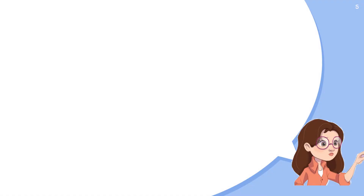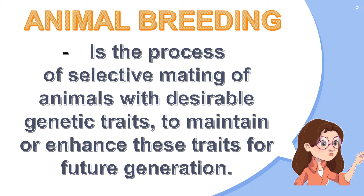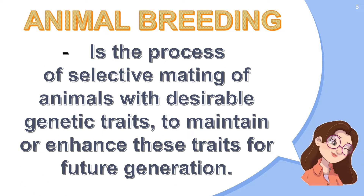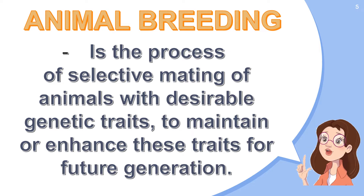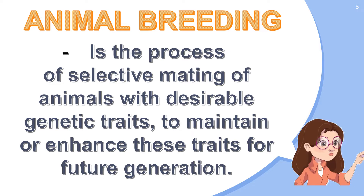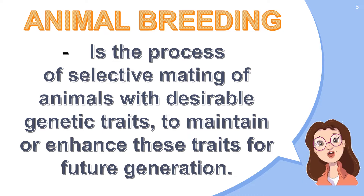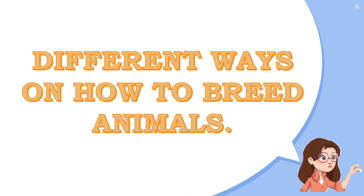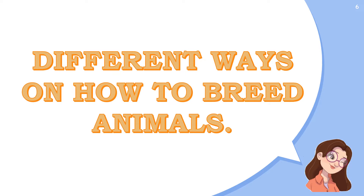What is animal breeding? When we say animal breeding, it is the process of selective mating of animals with desirable genetic traits to maintain or enhance these traits for future generations. For the first part of our discussion, I will be discussing the different ways on how to breed animals.